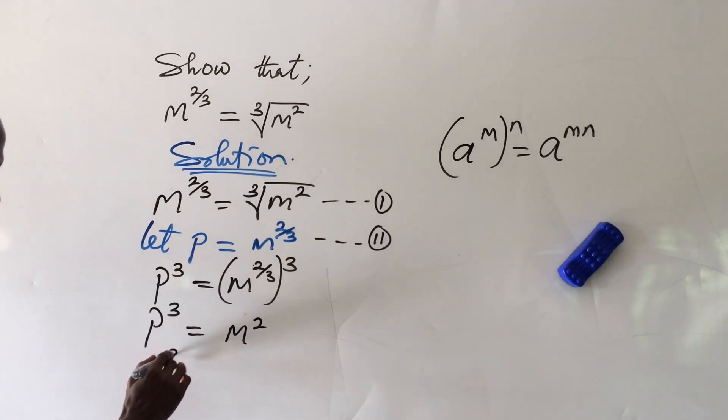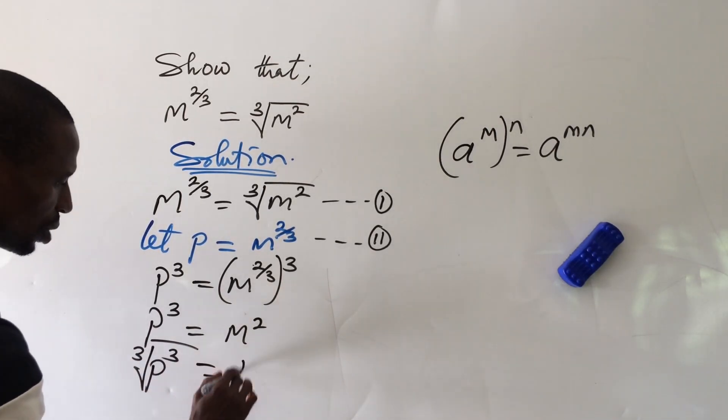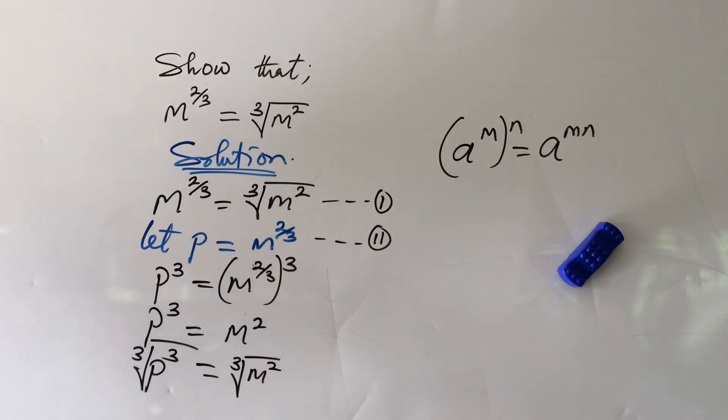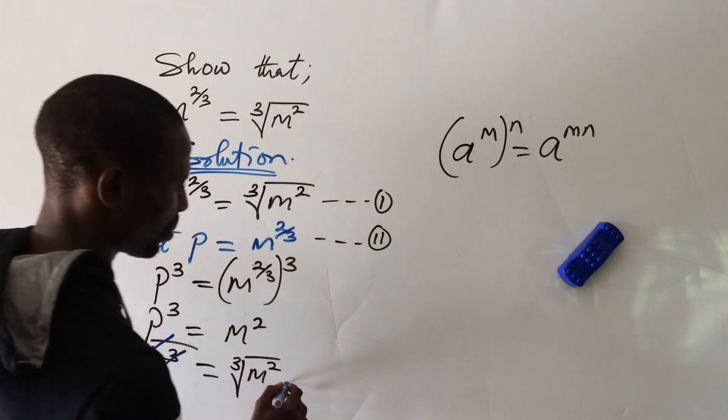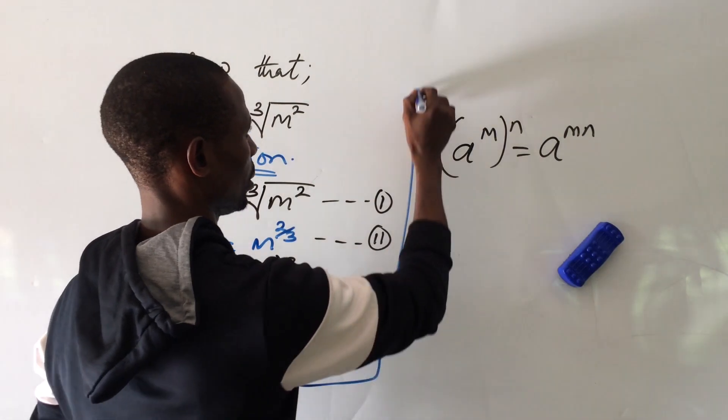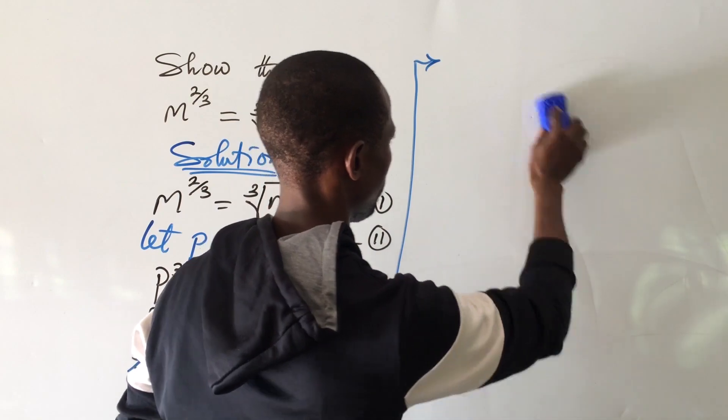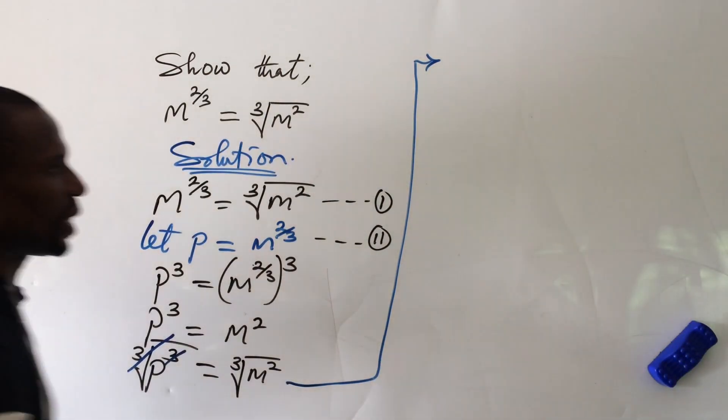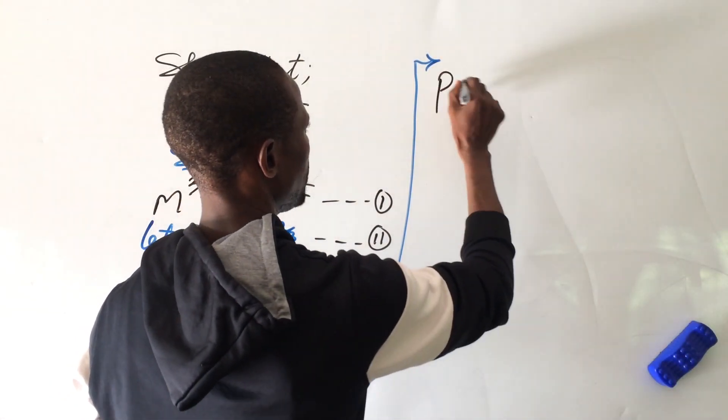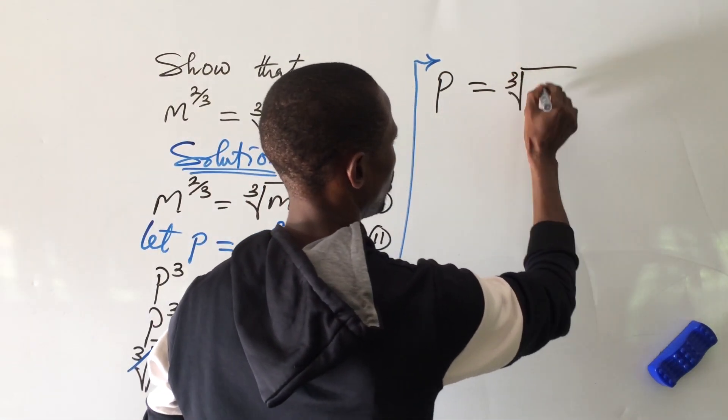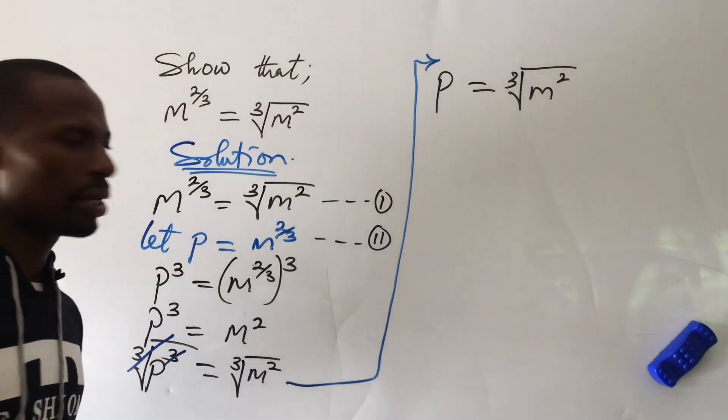And so this will now give me p to the power of 3 cube root equal to the cube root of m to the power of 2. What happened here? This cube root will take care of this cube here. From here, let's proceed and see what this gives us. Here now we're left with p. So when I have this to be p equal to the cube root of m to the power of 2.